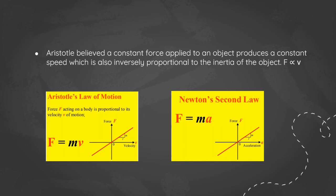Aristotle believed that a constant force applied to an object produces a constant speed, which is also inversely proportional to the inertia of the object — which he expressed as F = mv. But we know this is not so. It is actually force proportional to the acceleration of a body, which is Newton's second law: F = ma. So Aristotle was misled into equating force with velocity rather than, as Sir Isaac Newton was to show much later, with mass times acceleration.